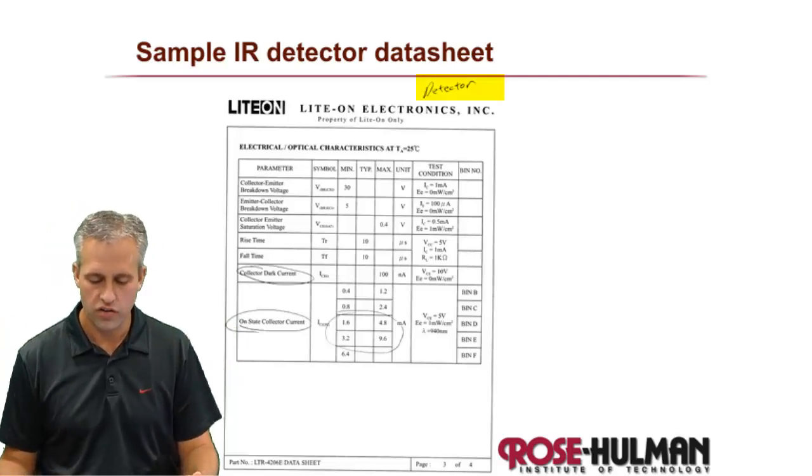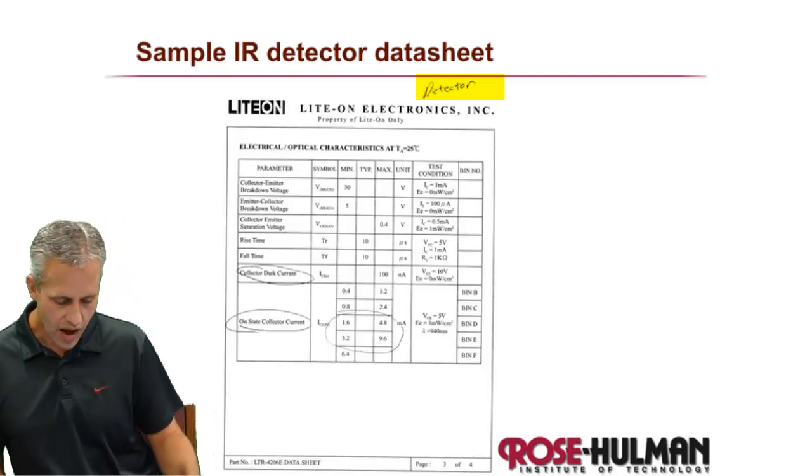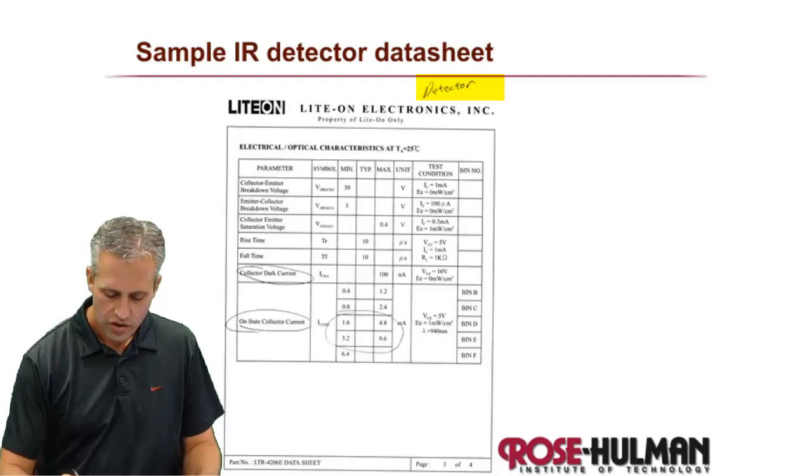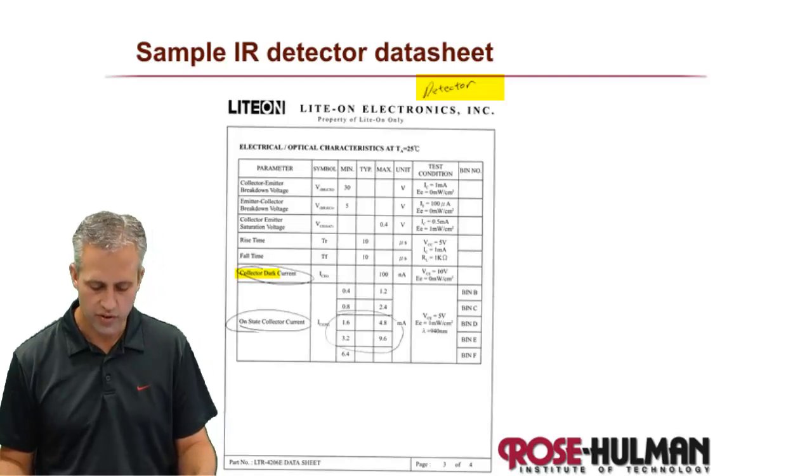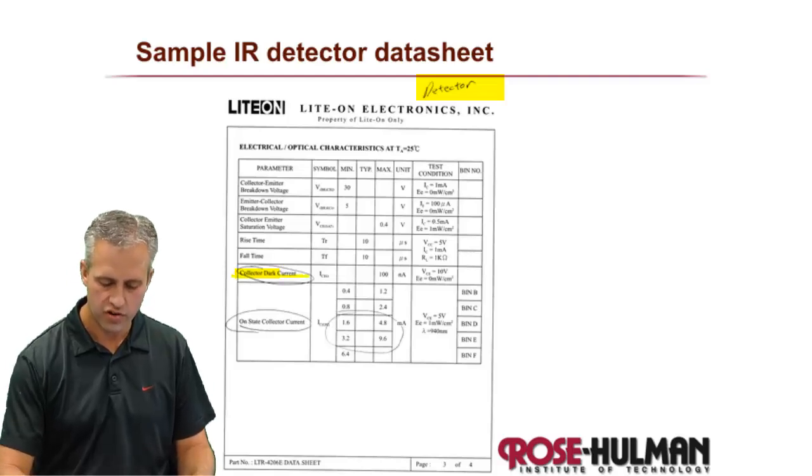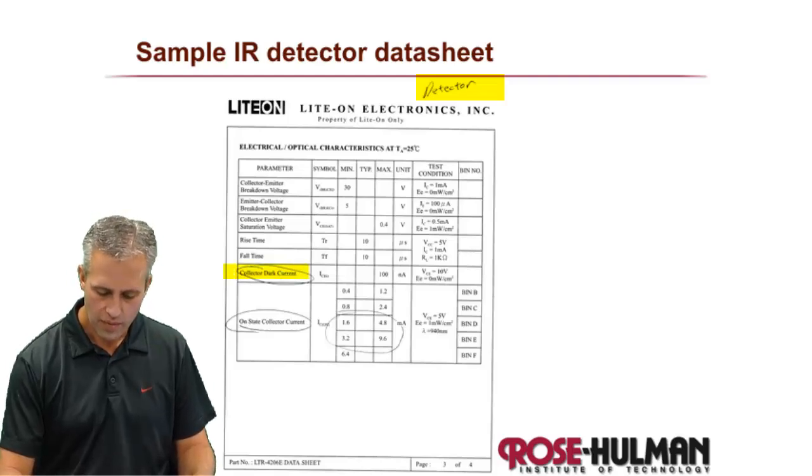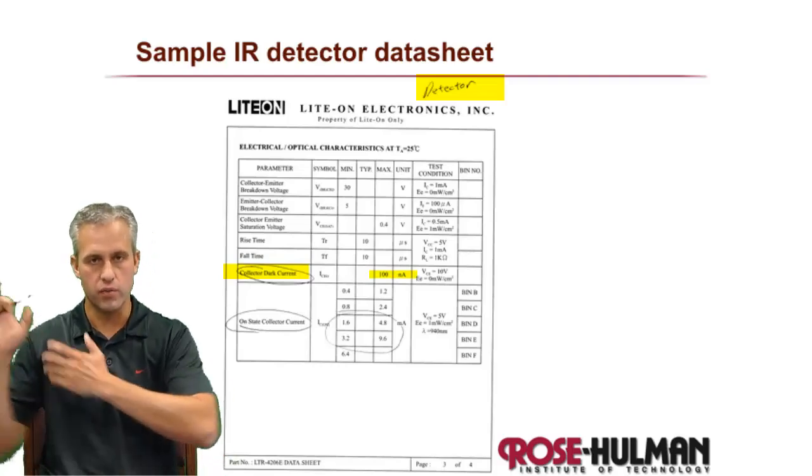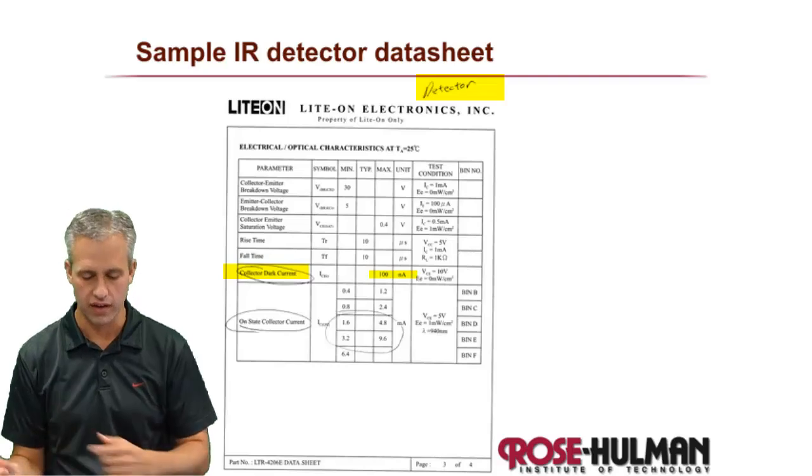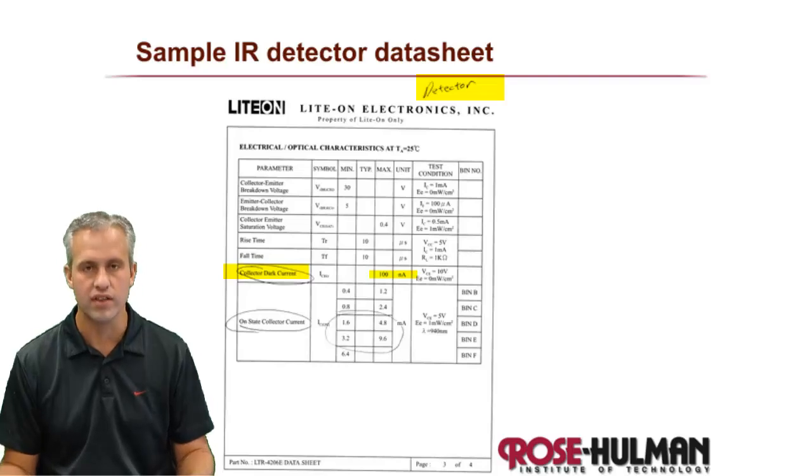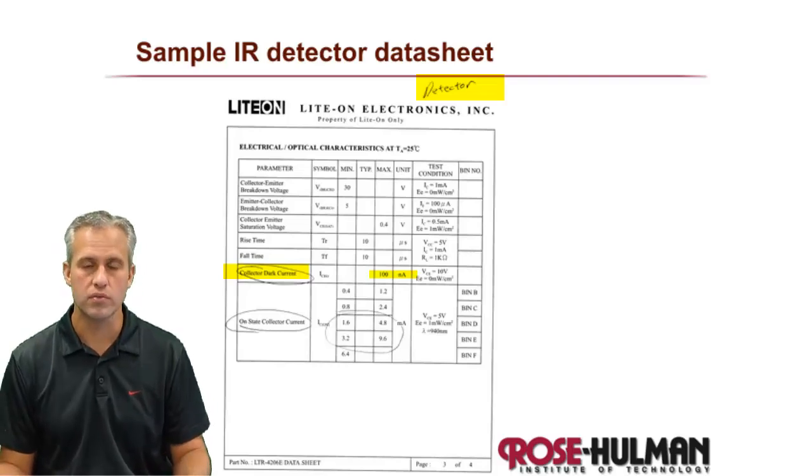So here's a detector that we've been using. I'm sure we'll change it over time. Looking at the datasheet for it, you look for things like the collector dark current. This is how much current it gives you in the dark. You can see that it's pretty small. It's not zero. Like you'd prefer it was zero, just block everything. But in the dark, it's like a hundred nanoamps. I can't even read that. But it claims to be quite small.